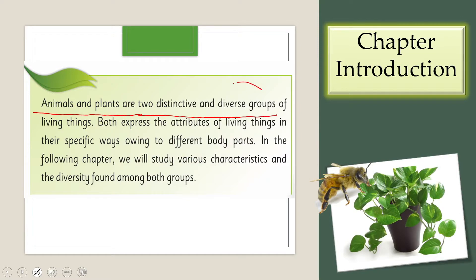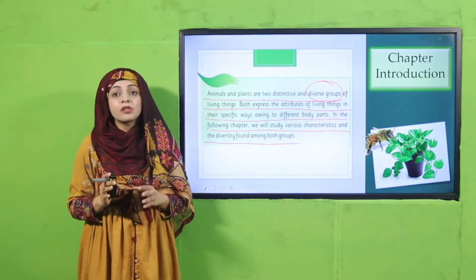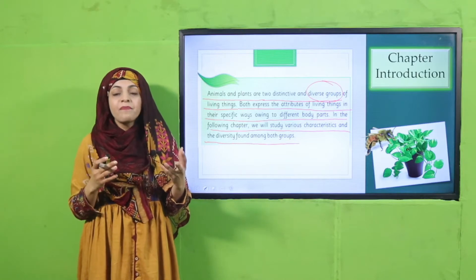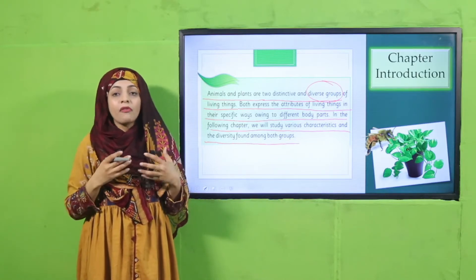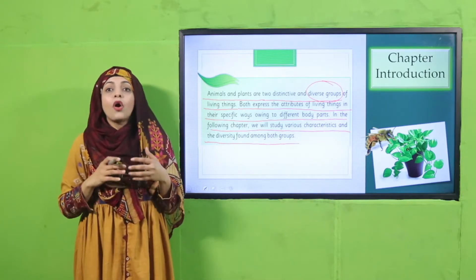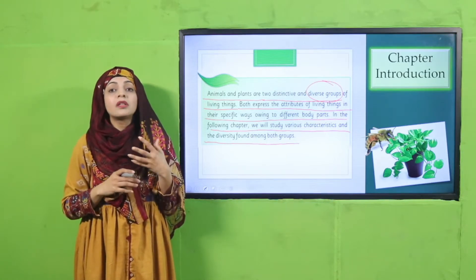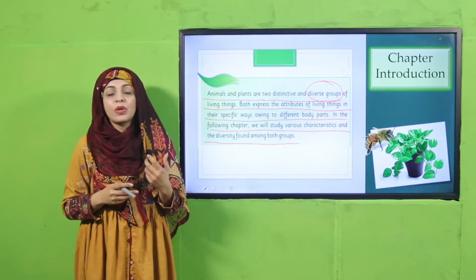In this chapter we will discuss about animals and plants, which are two distinctive and diverse groups of living things. Both express the attributes of living things in their specific ways, owing to different body parts. Animals and plants are both living things, but they are different from each other in some ways and also share similarities. We will discuss their different characteristics, similarities, and differences.